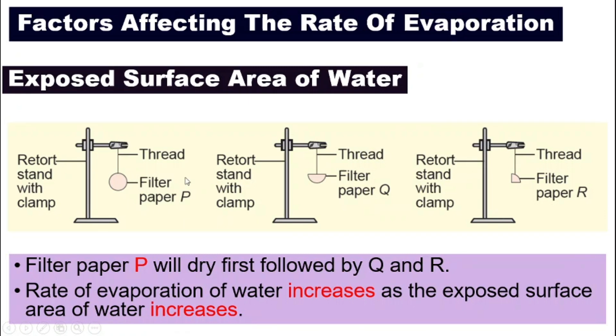If you compare these three filter papers, which one has the biggest surface area? Filter paper P has the biggest, and the smallest surface area is filter paper R.